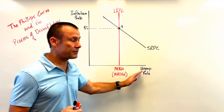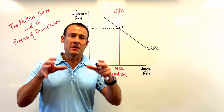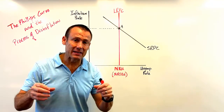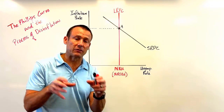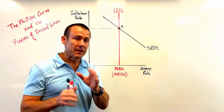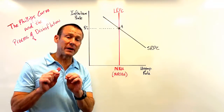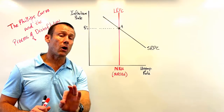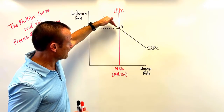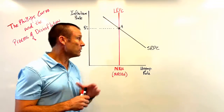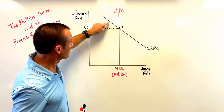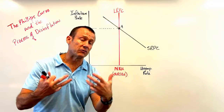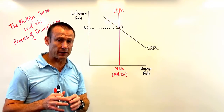When we draw an SRPC curve, we draw it with our society having some specific inflationary expectations — some inflation rate that they are expecting. We call it the expected inflation rate. For this particular SRPC that I have drawn, the expected inflation rate is 5%. Anywhere we might be on this short-run Phillips Curve, the expected inflation rate is 5%. The actual inflation rate could go up or down, but the expected inflation rate remains 5% as long as we are on this curve.